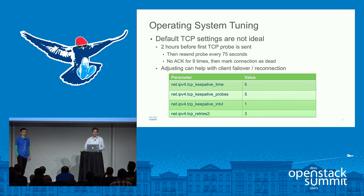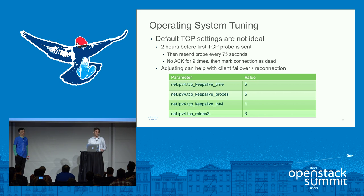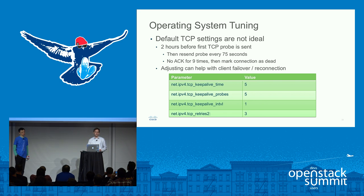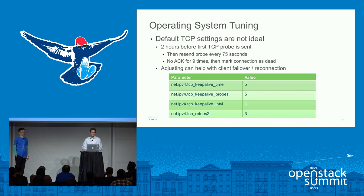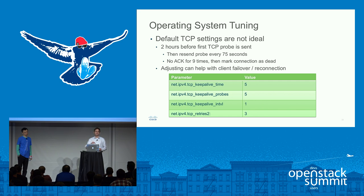On to some operating system tuning. Default TCP settings are really not ideal — we're talking over two hours before TCP Keep Alive even sends a probe packet to see if a connection is still alive. We adjusted these settings and it really helped clients fail over when a Rabbit node went down. We recommend setting the Keep Alive time to five seconds, five probes with a one-second interval, and also setting the TCP retries. This really helped improve the client's ability to determine if there was an issue with Rabbit and decide to connect to the next node.